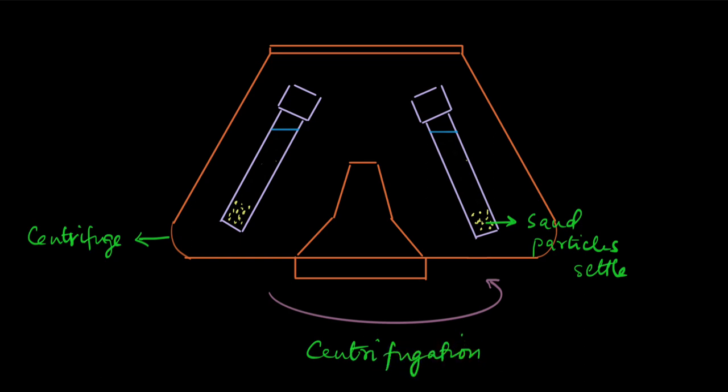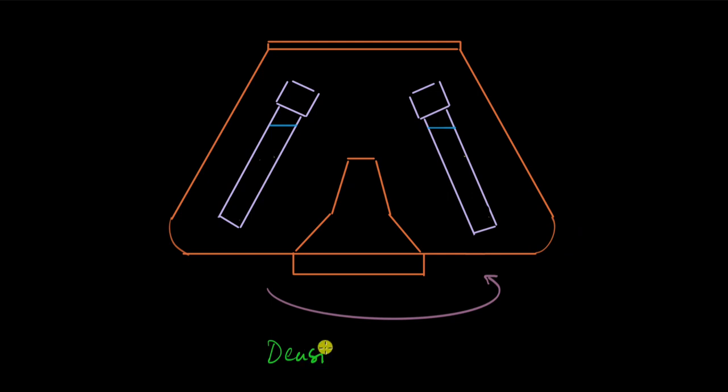There are different types of centrifugation depending on what we need to do, and one of the types is called density gradient centrifugation. In this type of centrifugation, what we do is we take a substance and make a concentration gradient of it along this solution in the tube that is being rotated.